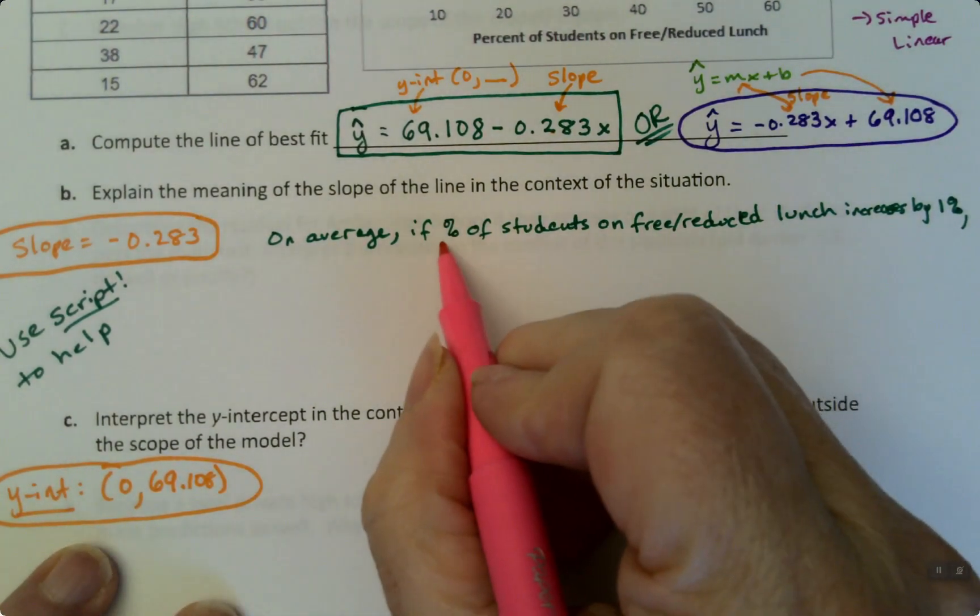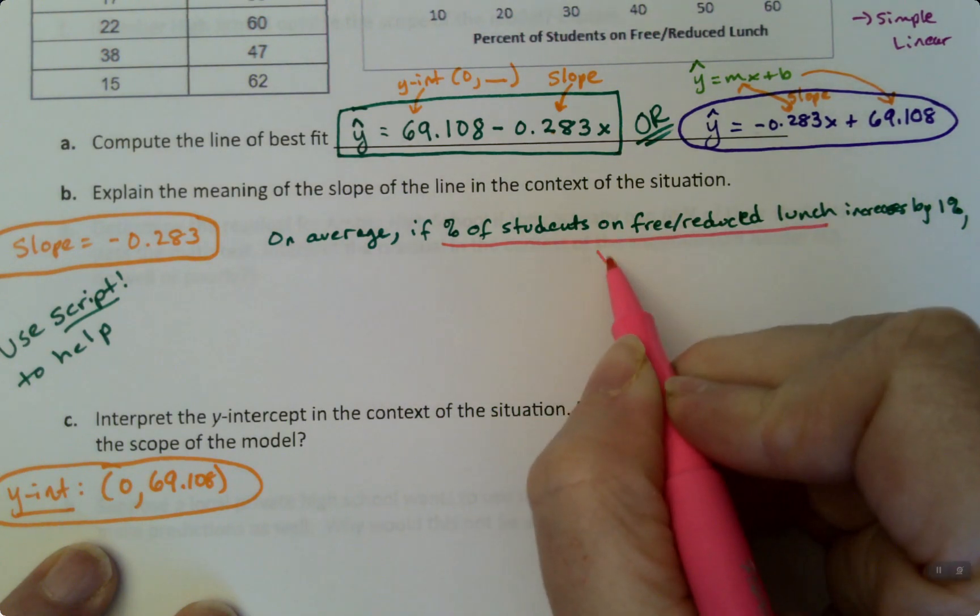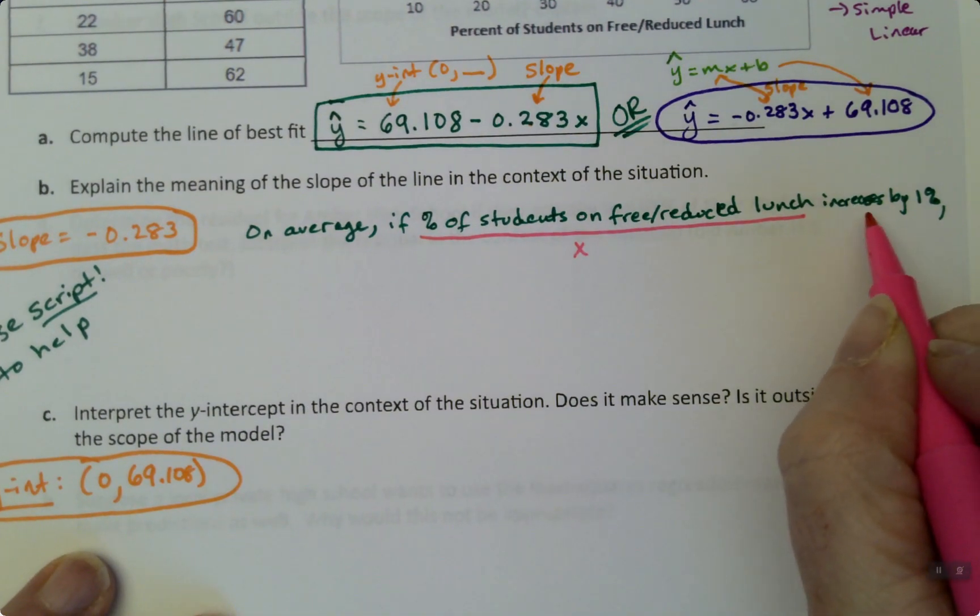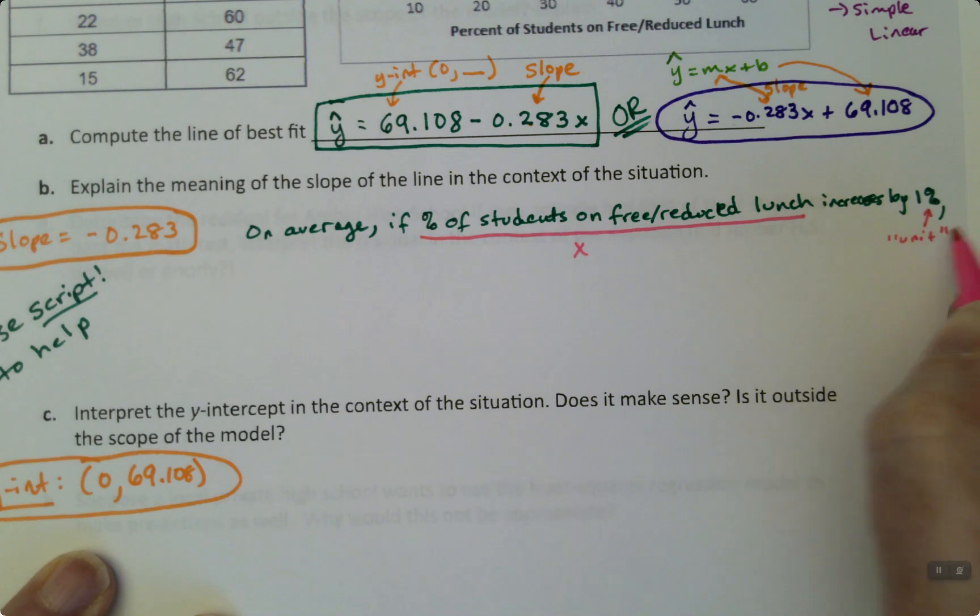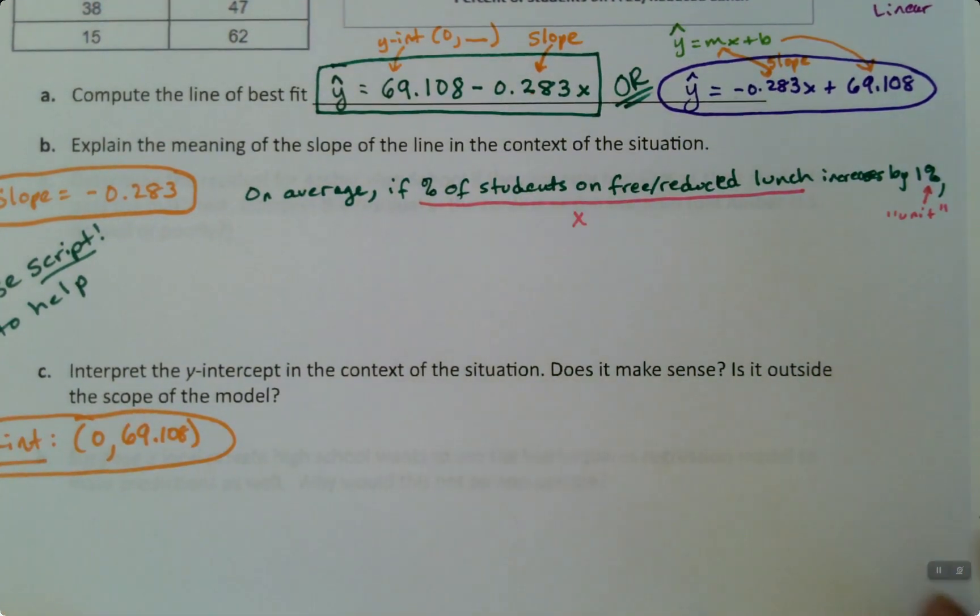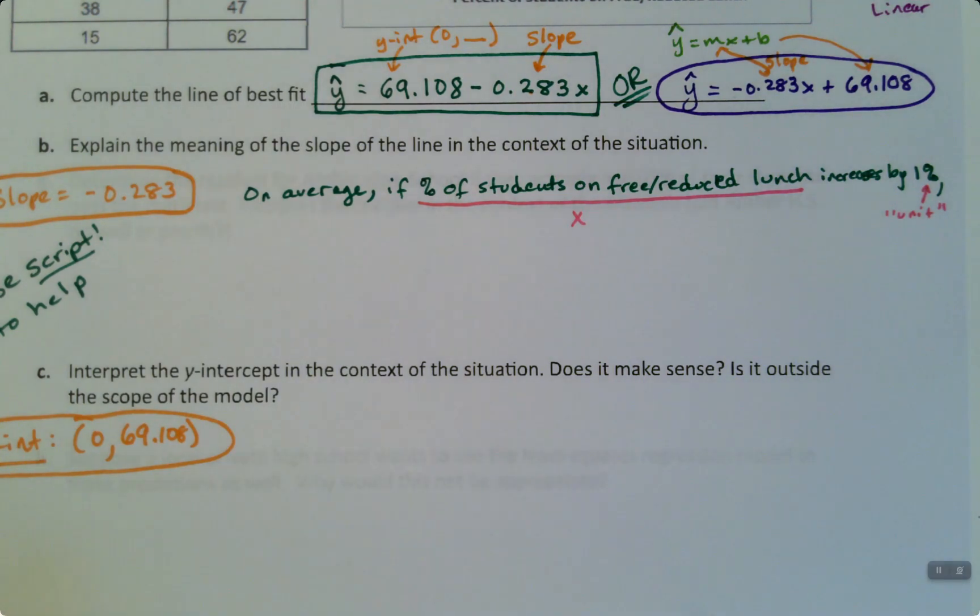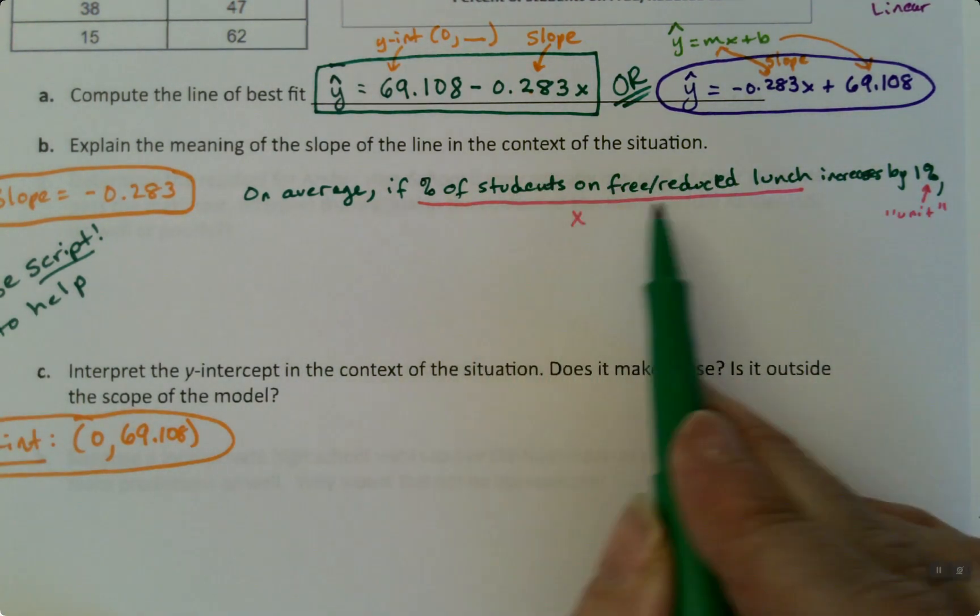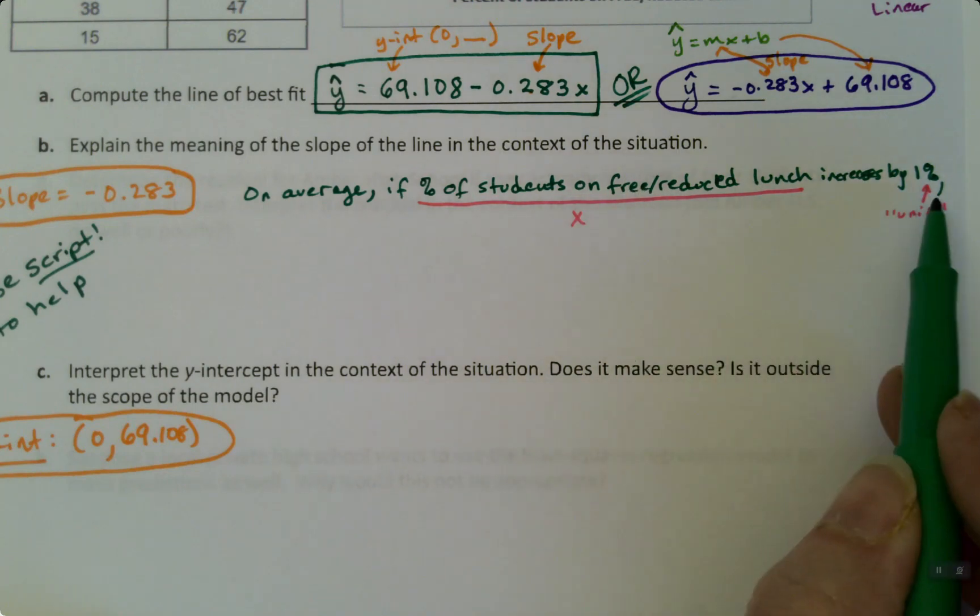All right, now just take a moment. Percent of students on free reduced lunch, that's X in context. Increases, it's always increases by one. It's always one. The percent sign is kind of our unit for this case. I mean, it would be feet or dollars or whatever, but in this case it's percent. Both of these were percent.